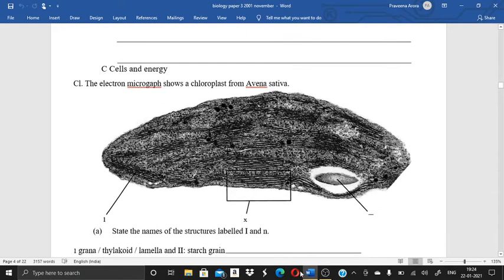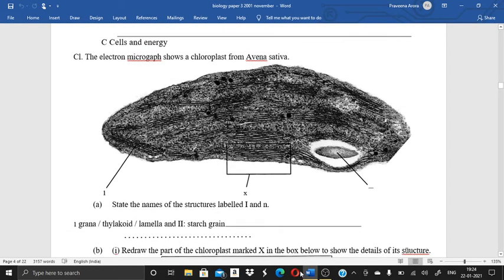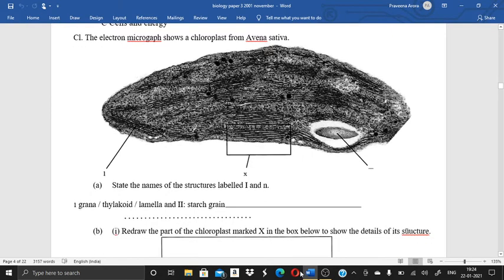Now the question comes from cells and energy. The electron micrograph shows a chloroplast from Avian Sativa. You have to state the name of the structure labeled first and N. So over here I have given you grana, thylakoid, lamella and second is starch grain.